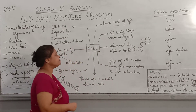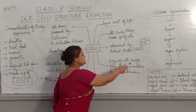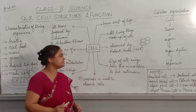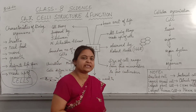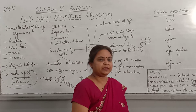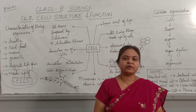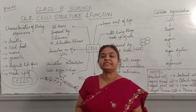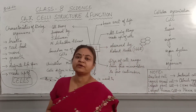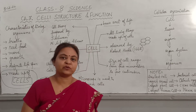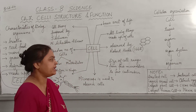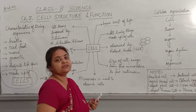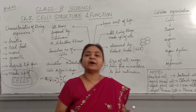The size of the cell ranges from a few micrometers to a few centimeters. Some cells may be big enough that you can see them with the naked eye. But most of the cells are microscopic — you cannot see them with the naked eye. For that purpose, we need a microscope.